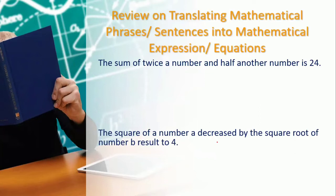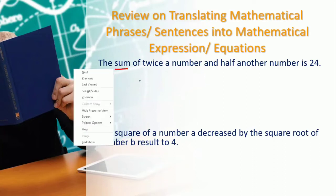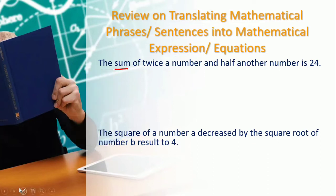We review on translating mathematical phrases or sentences into mathematical expressions or equations and vice versa. Let's translate mathematical phrases or sentences into mathematical expressions or equations. For example, number one: we have 'the sum of twice a number and half another number is 24.' The operation for this is addition.